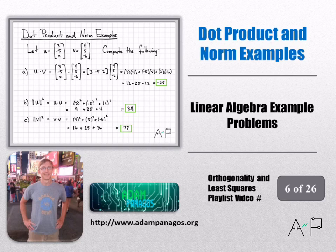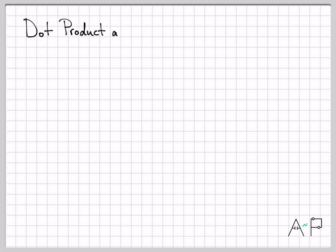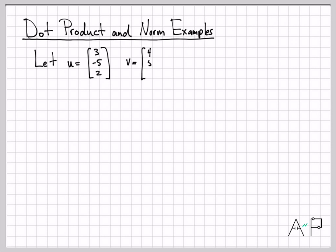Let's work through a few more examples of just computing dot products and norms and norms of sums of vectors and things like that just to get a little bit more practice with the notation and the computations. So this video is dot product and norm examples. We're going to do a variety of computations and the computations are going to use these vectors here. U is 3, negative 5, 2. V is 4, 5, negative 6.